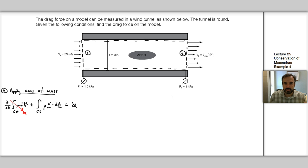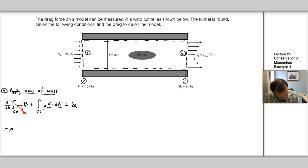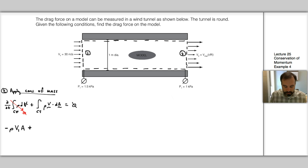The upstream side is straightforward — the velocity is perpendicular to dA, so it's a simple multiplication giving negative ρ V1 A as an inflow. Then we add the flux from the second surface, and this is where it gets a little different because now we have a spatially varying flow across that surface.